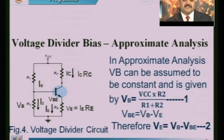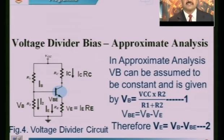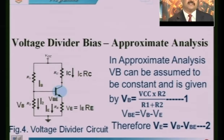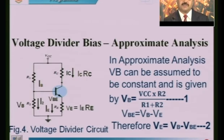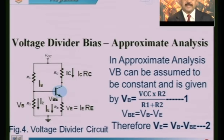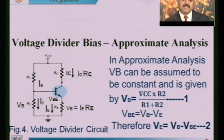In the approximate analysis we have assumed two values. The first approximation is that IC is approximately equal to IE. The second approximation is that when we come across base current IB of the BJT, it is very small compared to the voltage divider bias network current I2. So when IB is less than I2, we go for approximate analysis.